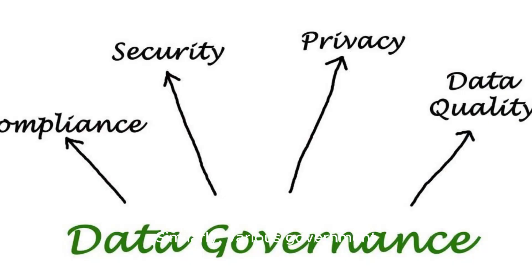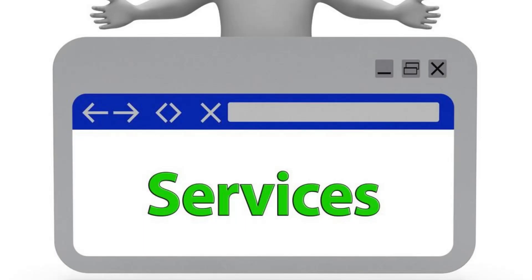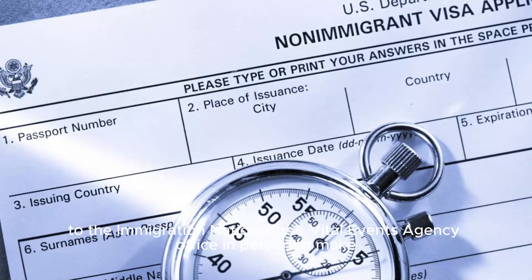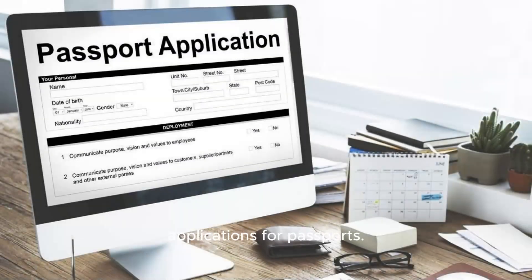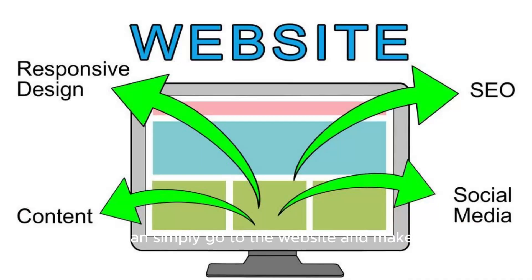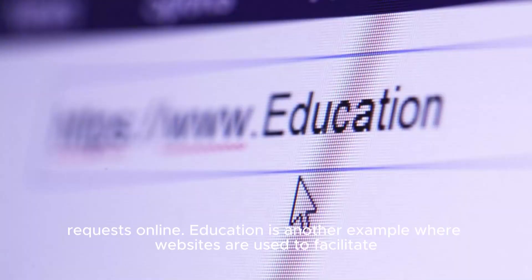Similarly, various government e-services are accessed through websites. For example, citizens do not need to go to the Immigration, Nationality, and Vital Events Agency office in person to make applications for passports. They can simply go to the website and make their requests online.